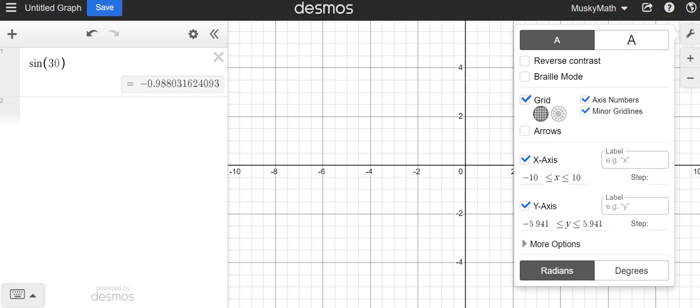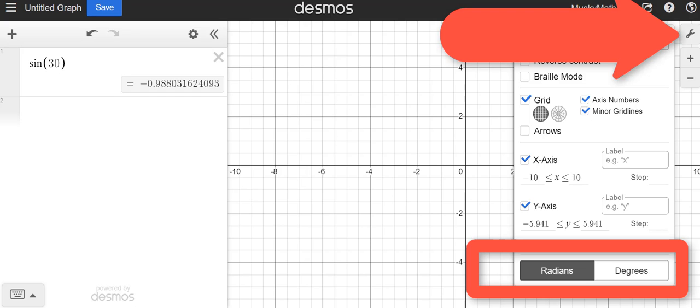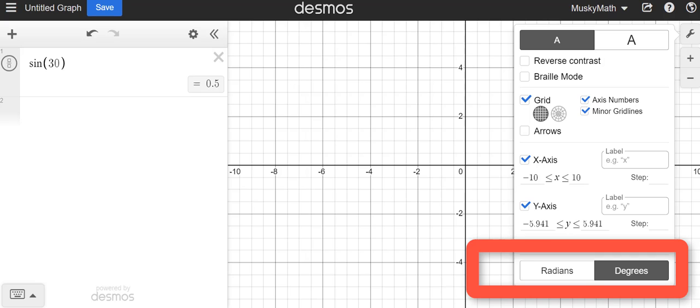So what you're going to do is go over to the wrench over here on the right, and you'll notice down at the bottom it says radians is what's colored in there, so you want to make sure you select that and hit degrees, and then check it out, it changes to that 0.5.